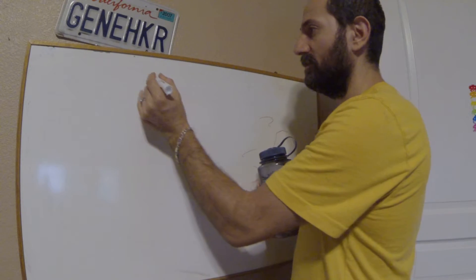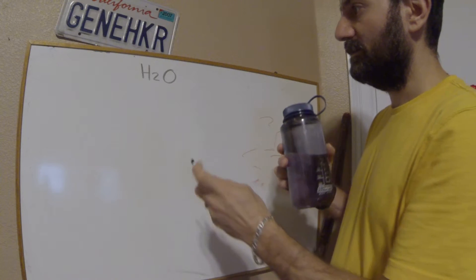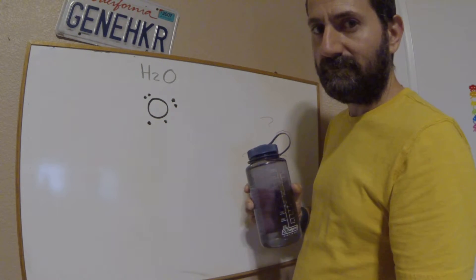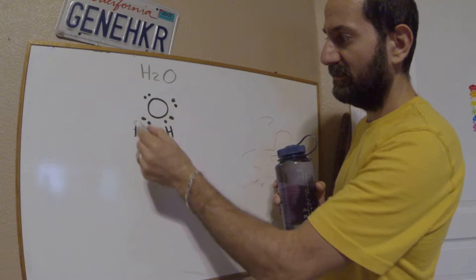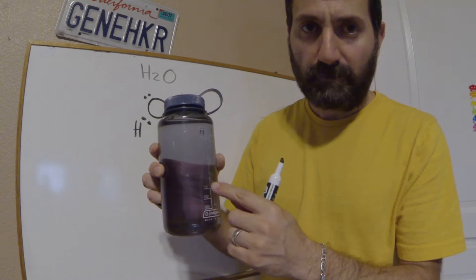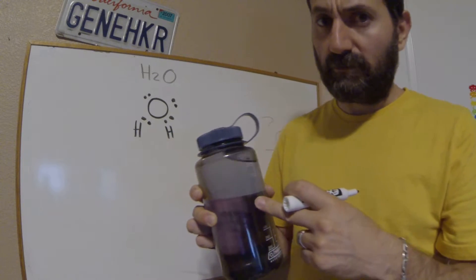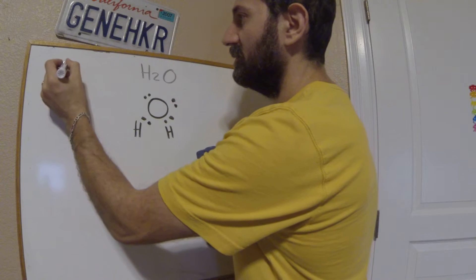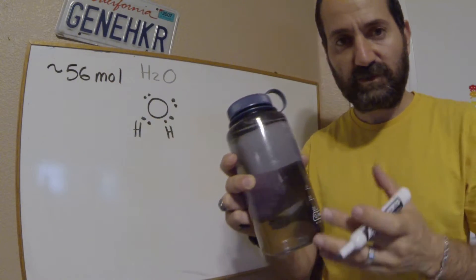In my bottle of water here, I have H2O. Oxygen has six valence electrons and it's bound to hydrogen, which brings one valence electron — that's water. Most of my water molecules in my bottle are H2O. How many water molecules are in a liter of water? There are about 56 moles — that's just how many water molecules I have.